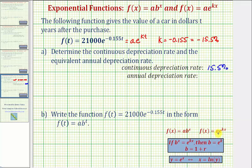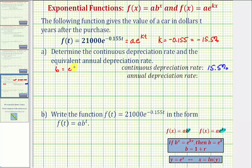For these two exponential functions to be equivalent, b to the x must equal e to the power of kx, which means the base b must equal e to the k. We'll use this equation to determine the base b. Once we determine b, we can determine the value of r, which gives us the annual depreciation rate.